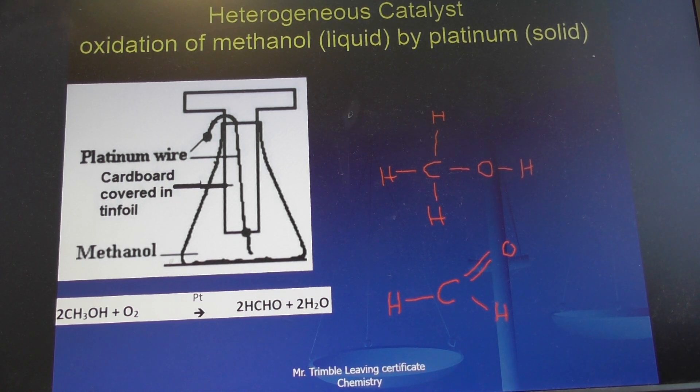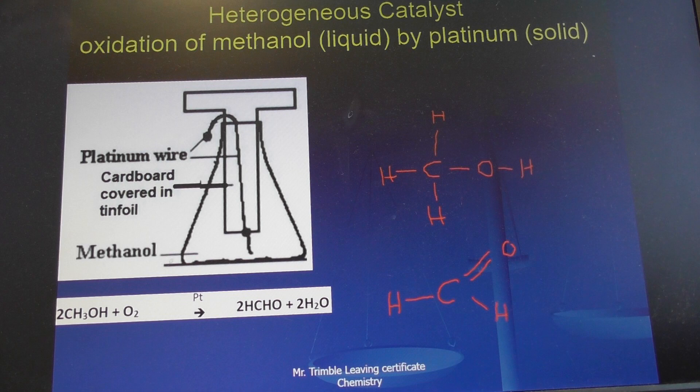Anything that ends in -ol would be an alcohol. There you have the methanol and there you have the aldehyde produced from it, methanal. If you count what happens between here and here, there's loss of hydrogens. Normally oxidation in terms of leaving cert we'd always classify it as a loss of electrons.